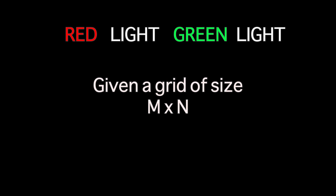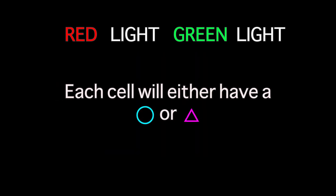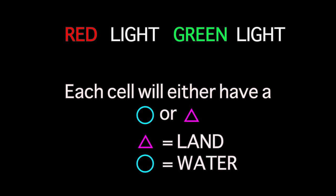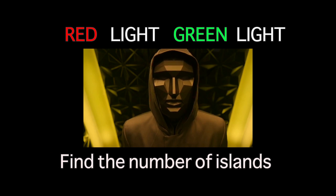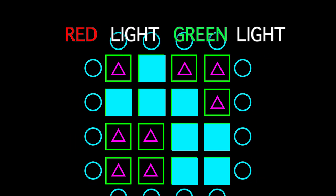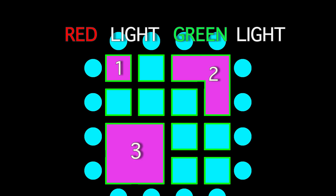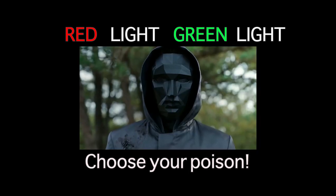Here is a simple puzzle. Given a grid of size M by N, each cell will either have a circle or a triangle. A triangle represents land and a circle represents water. Your task is to find the total number of islands on the grid. An island is classified as any land surrounded by water. You may assume all four edges of the grid are surrounded by water. Adjacent land horizontally or vertically are considered the same island. In this example, we have a total of three islands. You may code in any language you wish. That's easy — I'll do this with Python.